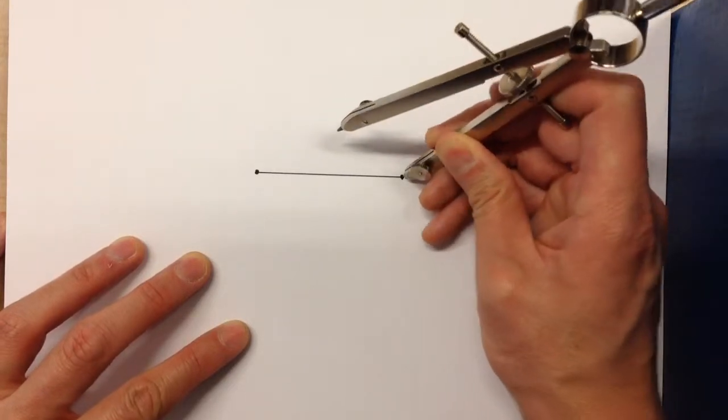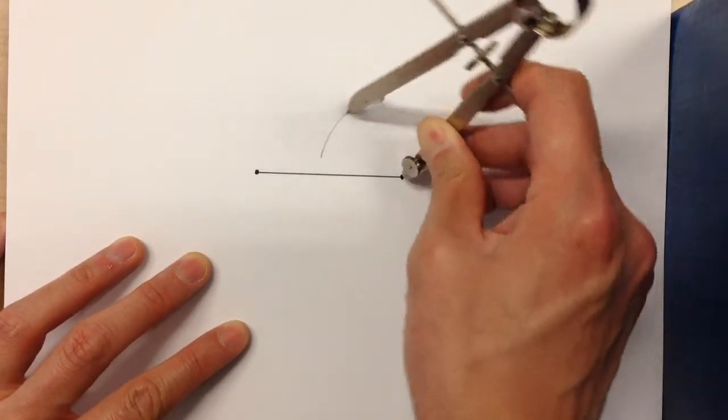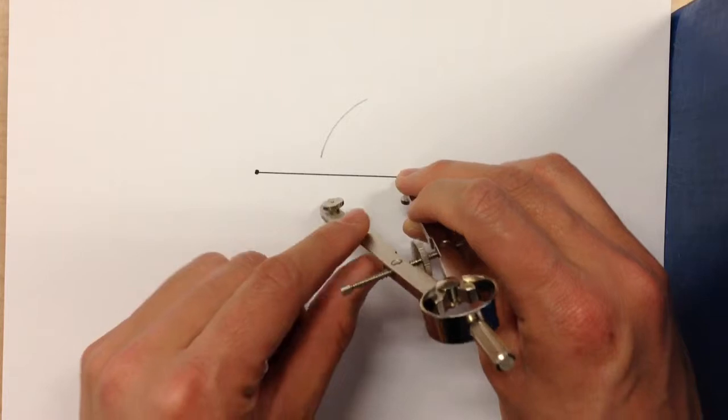Now, from one end of your segment, swing an arc up top and swing an arc down below.